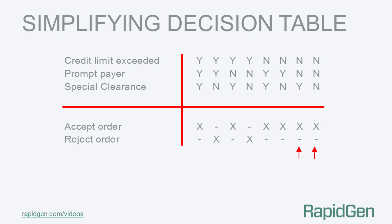In the example we can simplify rules 7 and 8 — they have the same action and differ only by a Y and N in the third condition, so the consolidated rule becomes N N dash X dash. Rules 5 and 6 simplify to N Y dash X dash. Rules 1 and 2 can't be simplified because they have a different action, but rules 1 and 3 can, giving Y dash Y X dash. Finally, rules 2 and 4 consolidate to give Y dash N dash X.